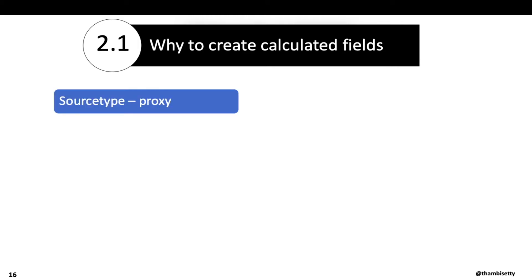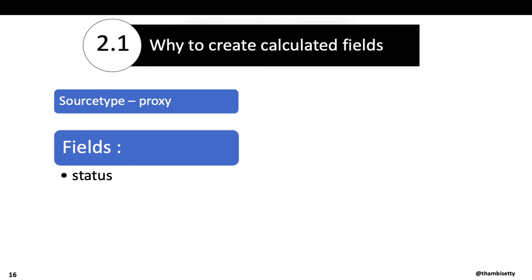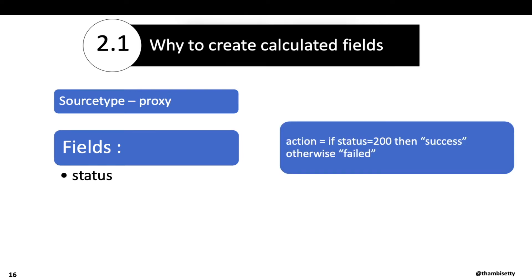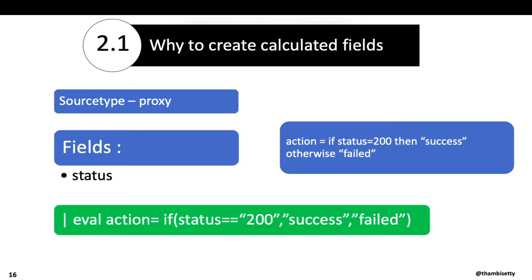Let's look at another example for the same source type. We have a field called 'status' and we want to create a field called 'action' where if status equals 200 the action should be 'success,' otherwise 'failed.' You can do this in Splunk by writing an eval command: eval action=if(status==200, "success", "failed"). Including this eval statement in all searches would be difficult, so we create a calculated field instead.